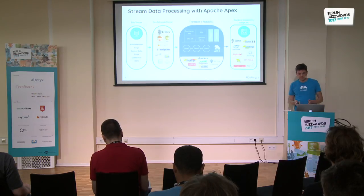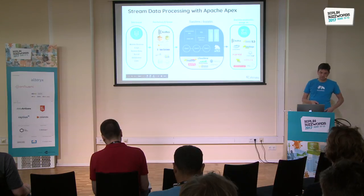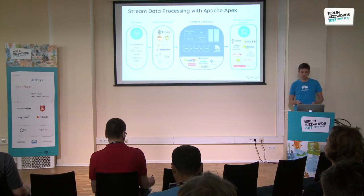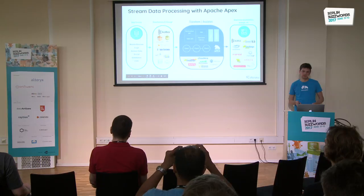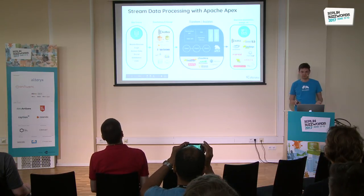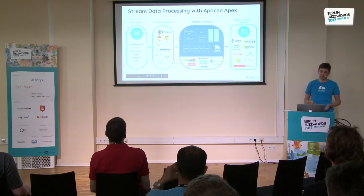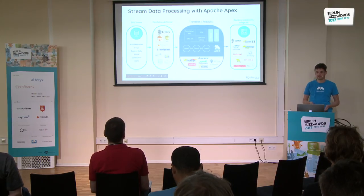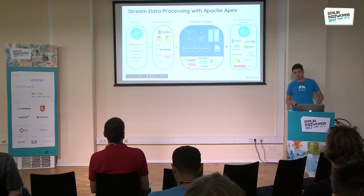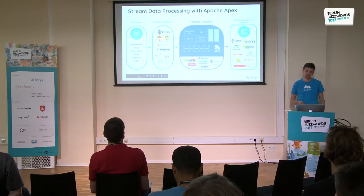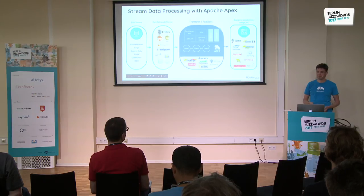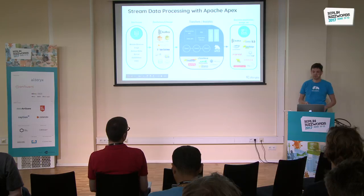Where does Apex fit in? You have sources of events — continuous streams of data from mobile devices, logs, sensors, and so on. You have systems that transport the data; Kafka is the most prominent one, storing and transporting data. Those are the most common sources for stream data applications. Then you want to process the data, and there are several options: Spark, Storm, Flink, and many choices just in the Apache Software Foundation alone.